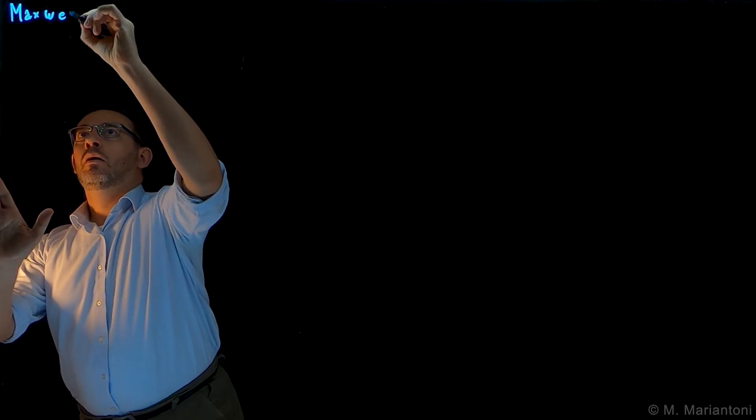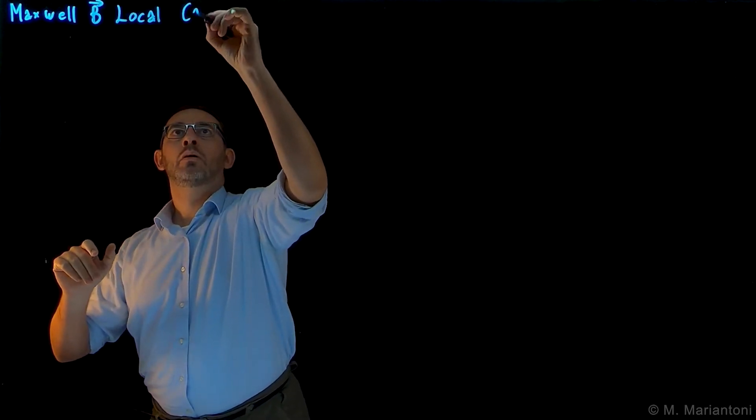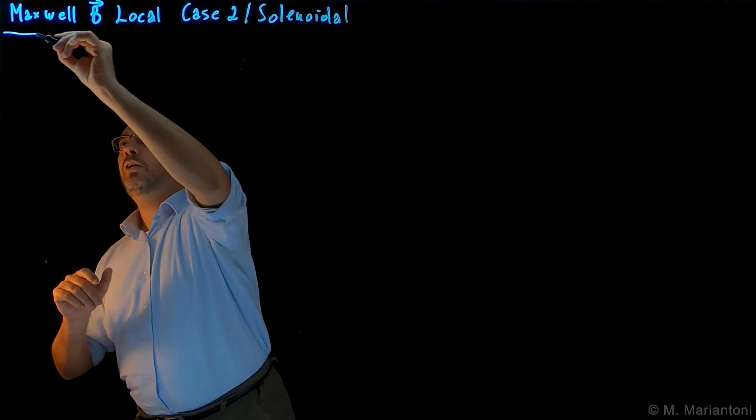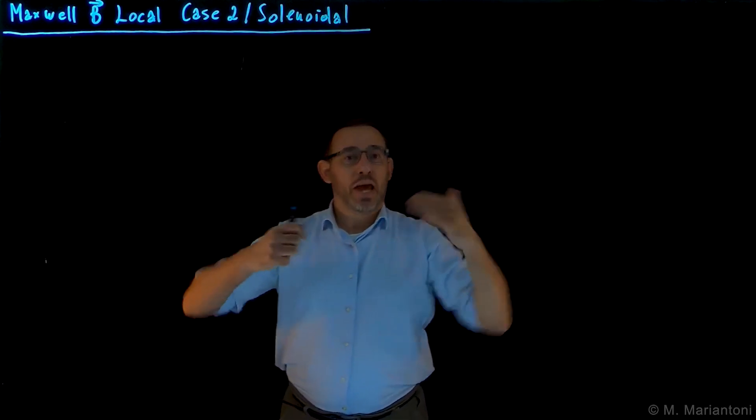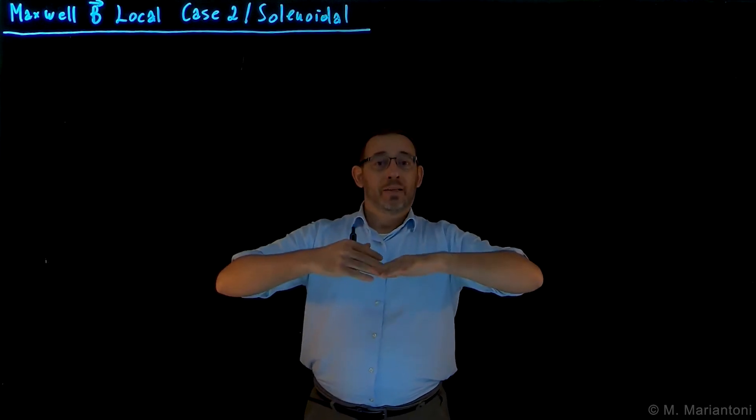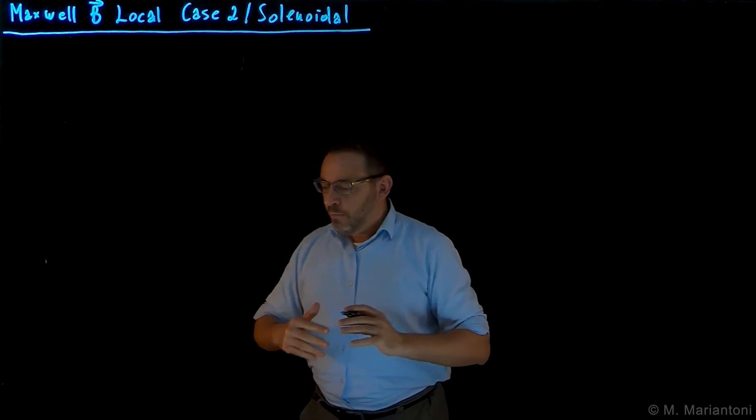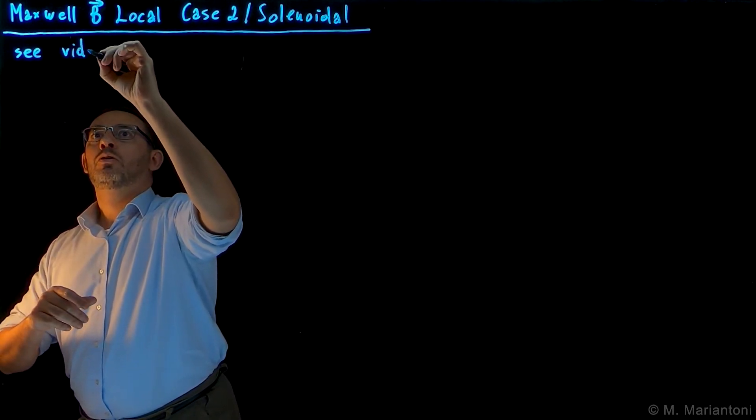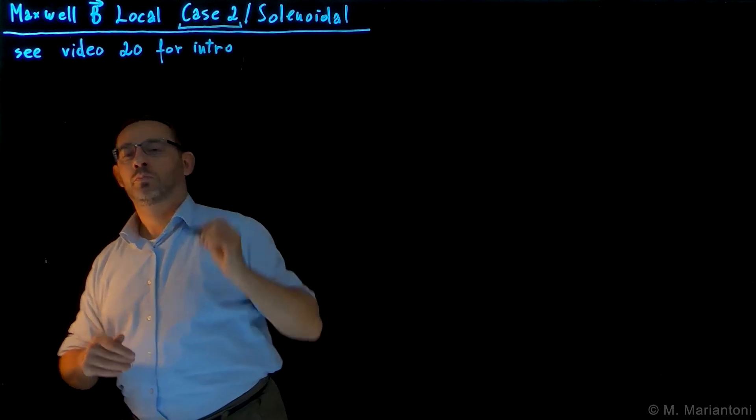The name of this video is Maxwell B Local Case 2, Solenoidal. In our previous video, we encountered case 1, which is the differential form of Maxwell's equations for the magnetostatic field B. Now we want to consider, as in the case of the electrostatic field E, also in the case of B, the presence of discontinuities. For an introduction to this concept, which is case 2, you can refer to video 20, the local form.